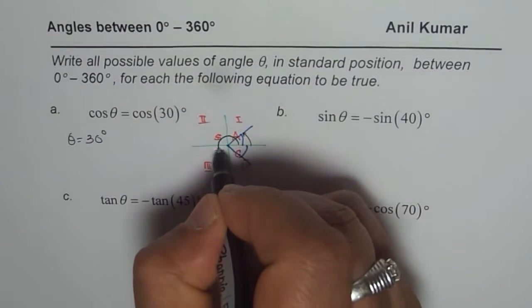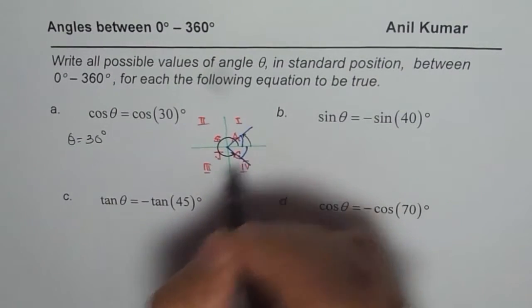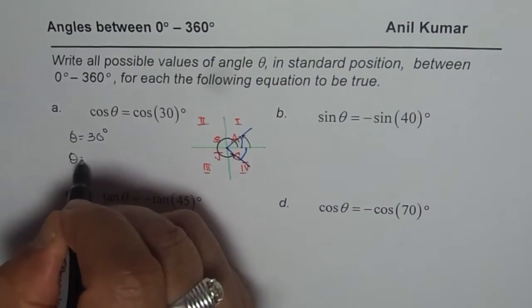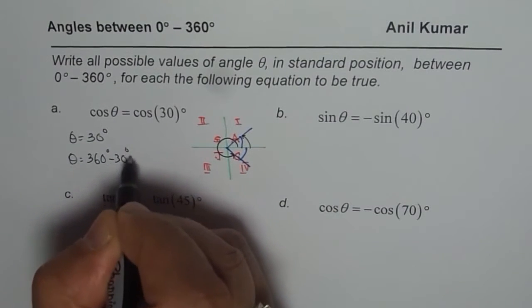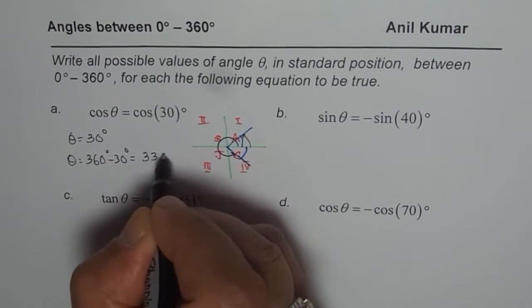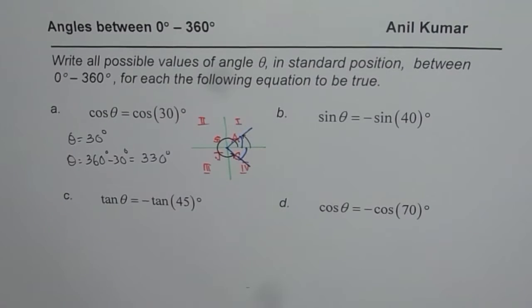The other one is 360 minus 30. So, the other solution is 360 degrees minus 30 degrees, which is 330 degrees. So, these are two possible solutions.